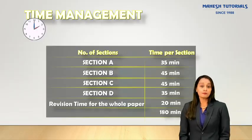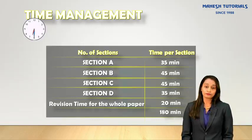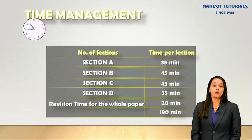The time given to write this paper is 3 hours. For Section A, you are going to spend around 35 minutes. For Section B, around 45 minutes. Section C, around 45 minutes again. And Section D is 35 minutes. So in total the whole paper should be completed in 160 minutes. The extra 20 minutes you are going to spend revising the whole paper and checking for any minute mistakes.